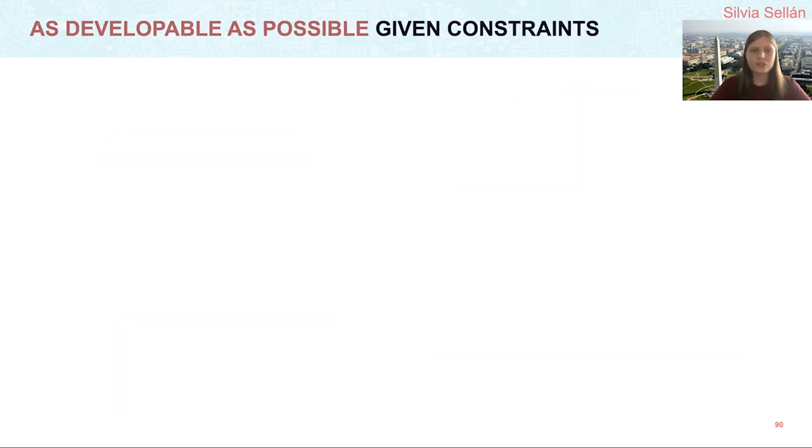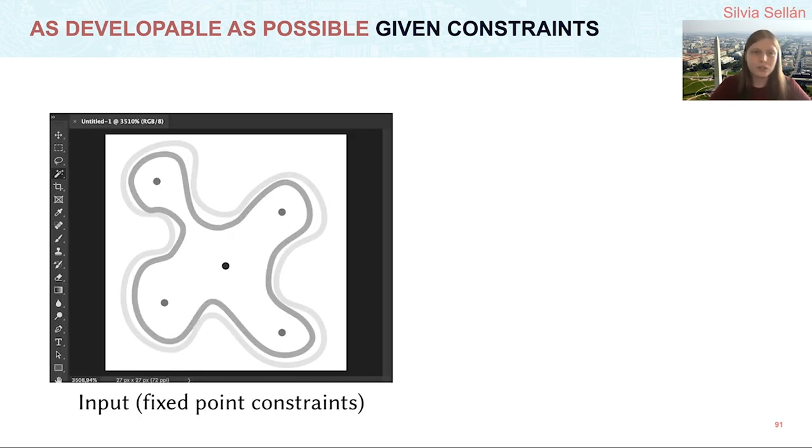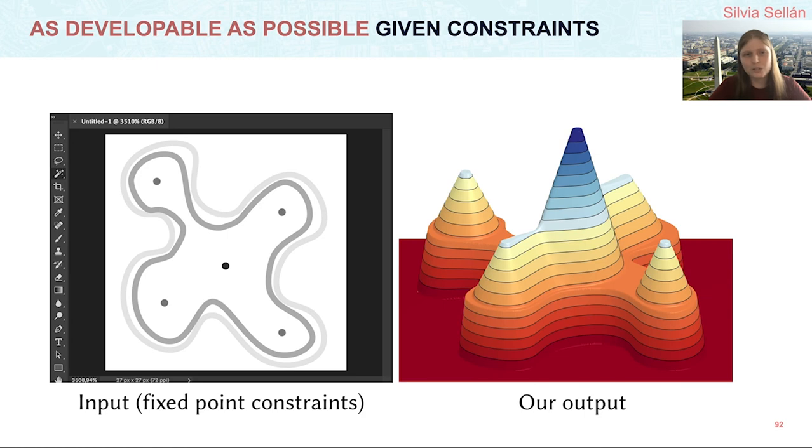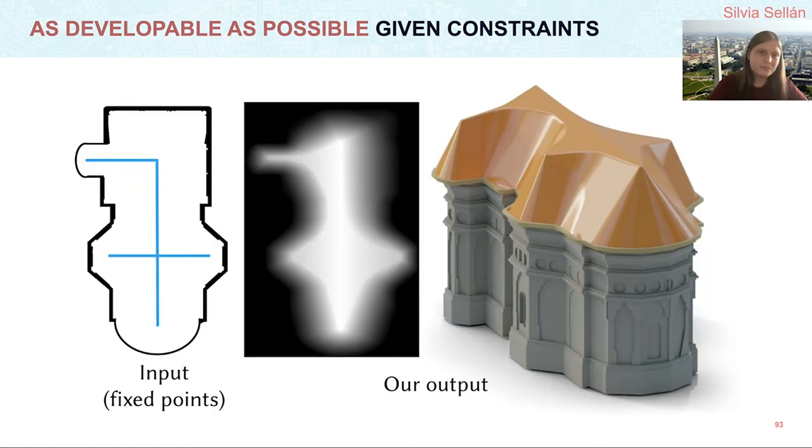Finally, another nice application of our method is to developable modeling. Given a set of constraints which can be drawn in any image editing software, we can minimize just the developability portion of our energy subject to these linear constraints to obtain a piecewise developable heightfield. We can use this, for instance, with the real-world plan of a cathedral to build it a developable roof, which one can then build out of any non-stretchable material like metal.